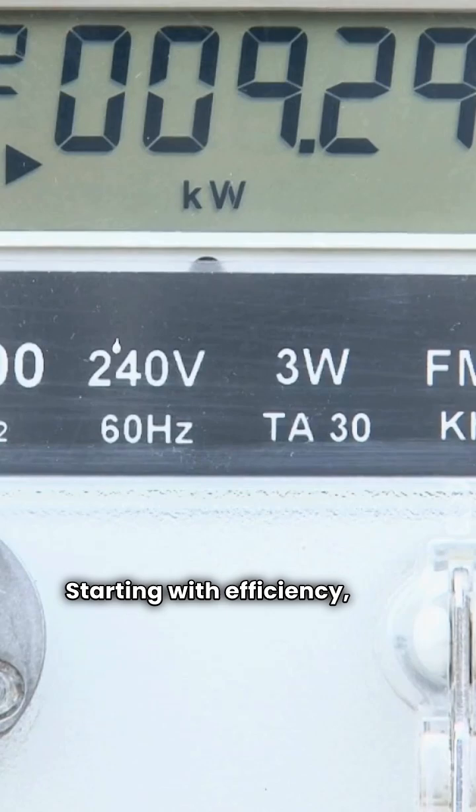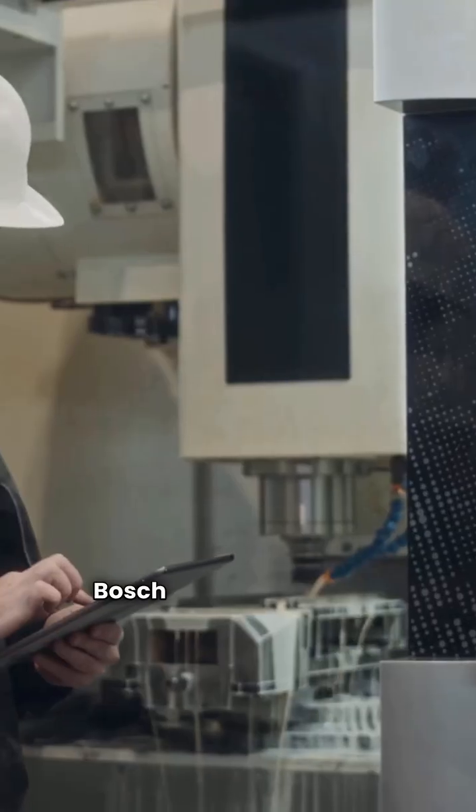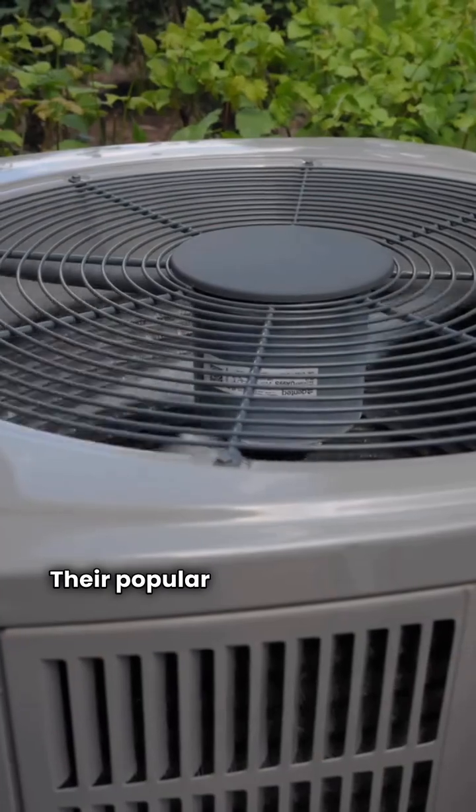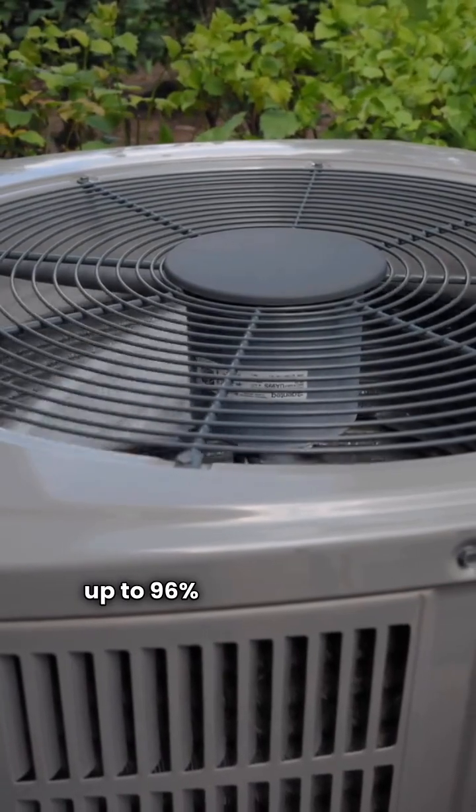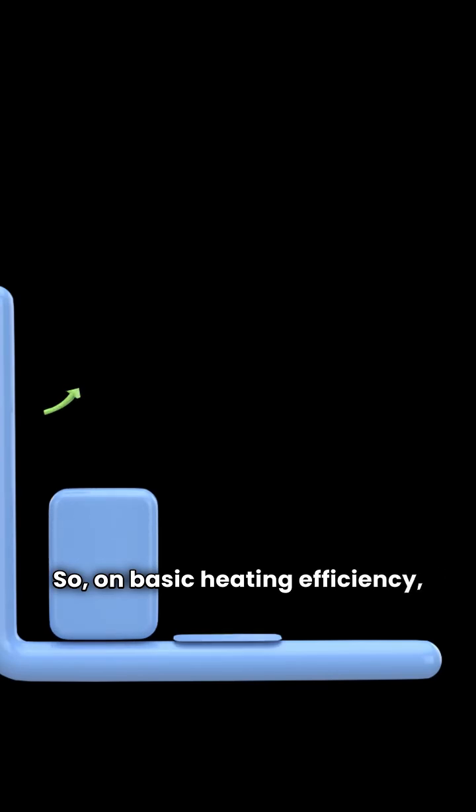Starting with efficiency, both brands are excellent here. The Energy Air Elite Series models like the AMEC96 and AMVM96 all come in at 96% AFUE. Bosch is right there too. Their popular BGH96 series also hits up to 96% AFUE efficiency. So on basic heating efficiency, it's a tie.